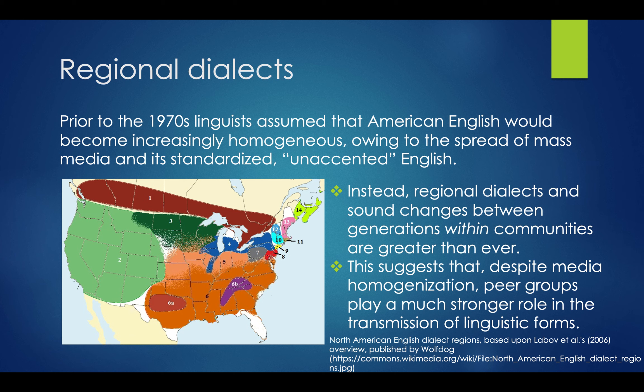Basically, people seek to differentiate — they use language as part of how they recognize in-group versus out-group. People who speak like you are, quote unquote, like you. This ties back into that ethnocentrism versus cultural relativism discussion — people who are like you are friends and collaborators, while people who are different are 'other,' and you seek to actively exclude them.